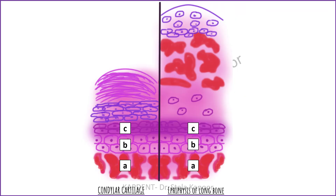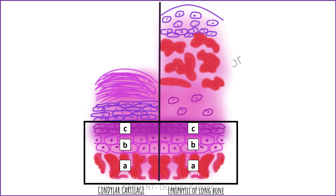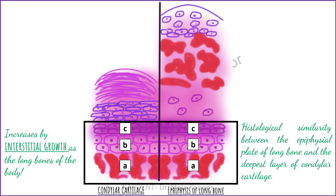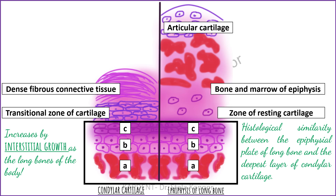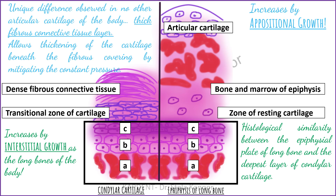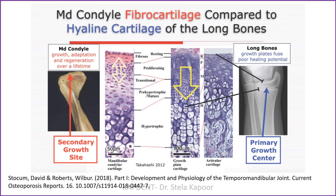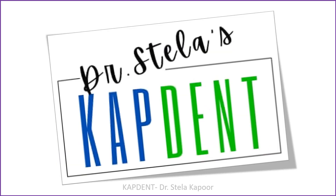The reason for this unique dual growth mechanism lies in histology. Because of the histological similarity between the deepest three layers of the epiphyseal plate of the long bone and the condylar cartilage, just like long bones, the condylar cartilage increases by interstitial growth. However, the unique presence of a thick fibrous connective tissue layer — found in no other cartilage of the body — allows for thickening of the cartilage beneath the fibrous covering, enabling appositional growth as well.